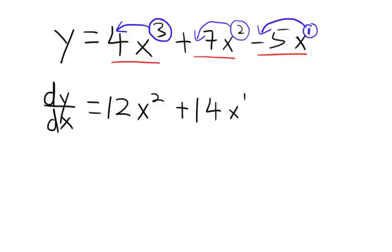And then 1 minus 1 is 0, so you get x power 0. Therefore you get 12x squared plus 14x minus 5 because x power 0 is 1. This is how you could solve the differentiation for equations that have more than one term.